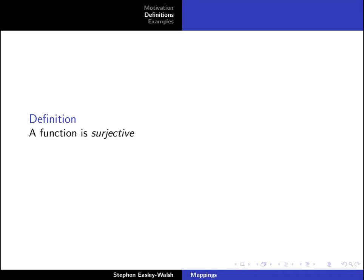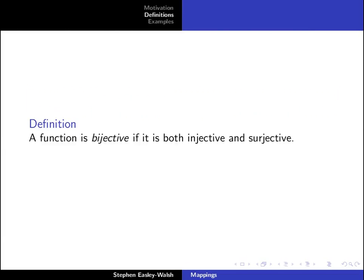A function is surjective if the image of the function is identical to the codomain. A function is bijective if it is both injective and surjective.